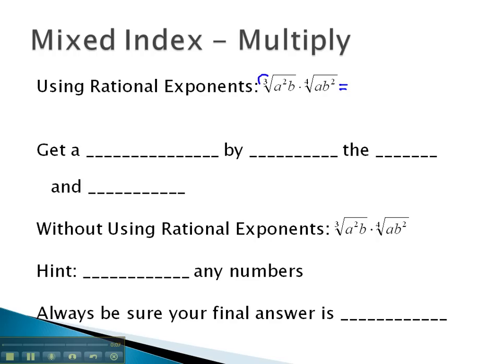You may notice this first radical has an exponent of 3, and so we can write that as a to the 2-thirds, b to the 1-third. The second has an index of 4, so we have a to the 1-fourth, b to the 2-fourths.